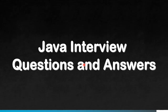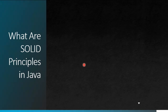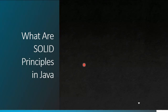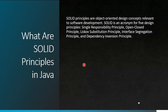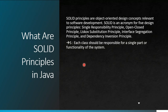The first question is: what are SOLID principles? SOLID principles are object-oriented design concepts relevant to software development. SOLID is an acronym for five design principles: S for Single Responsibility Principle, O for Open-Closed Principle, L for Liskov Substitution Principle, I for Interface Segregation, and D for Dependency Inversion Principle.